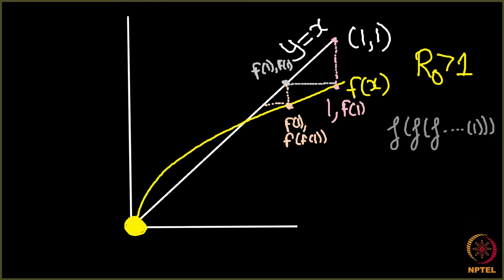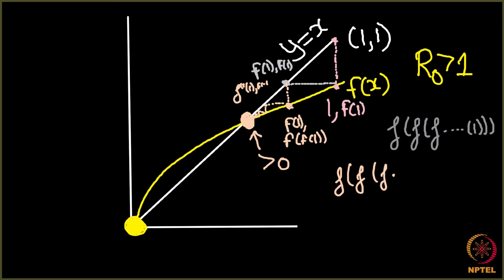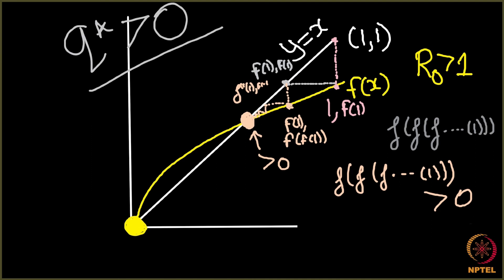Then I go horizontally and it will be (f(f(1)), f(f(1))). And then I can come here and it will be f'''(1). When I keep doing this infinite times, what will happen? When will it converge? At this point, both of these curves meet. So when I do this process infinite times, it converges here — I can't drop horizontally or vertically any further because both curves have met. So f(f(f(...(1)...))) converges at a point greater than 0, which means q* is greater than 0.